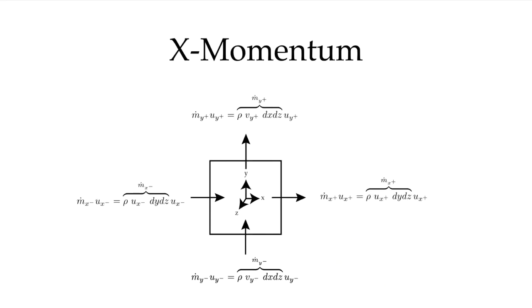Let's look at x-momentum. We'll derive the x-momentum equation, and from that we'll infer what the y and z-momentum component equations would be. To evaluate the terms where momentum is carried in and out of the control volume — that momentum carried through the faces — it's going to be a little bit easier to look at this in 2D, but we'll derive the equation in three dimensions as well.